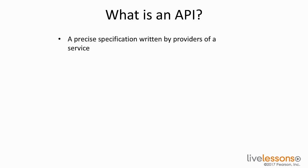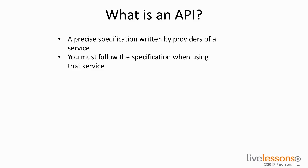It's a precise specification written by the providers of a service. For instance, it could be ACI that's providing network services, or UCS that's providing compute services, or a cloud that's providing infrastructure as a service. Whichever one of these services we're talking about, we need to know how to interact with that device.